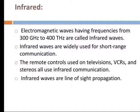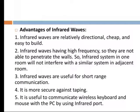Infrared waves use line-of-sight propagation. Advantages of infrared: Infrared waves are relatively directional, cheap, and easy to build. Because infrared waves have a high frequency, they are not able to penetrate walls. So an infrared system in one room will not interfere with a similar system in another room. Infrared waves are useful for short-range communication, are more secure against tapping, and are useful for communicating with wireless keyboards and mice via the infrared port.